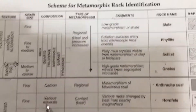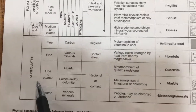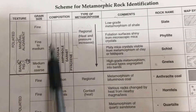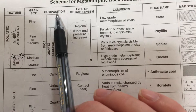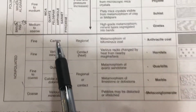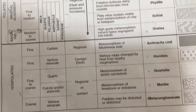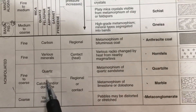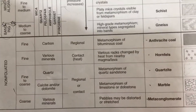With the non-foliated — no mineral alignment — rocks, a couple are going to be hinted at with their composition, so make sure you look at that. If we were in class there's a test we do with acid for calcite, and that makes it obvious.